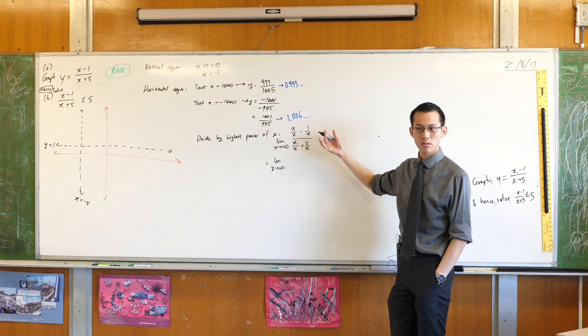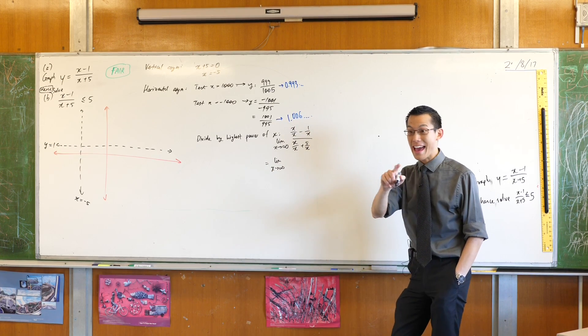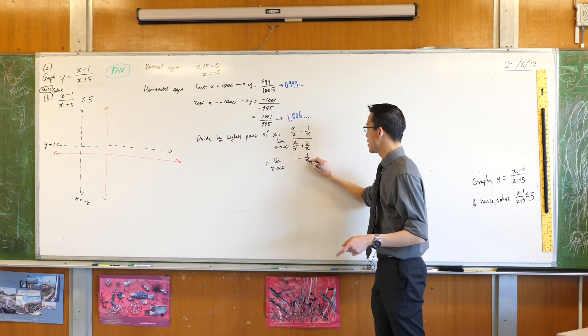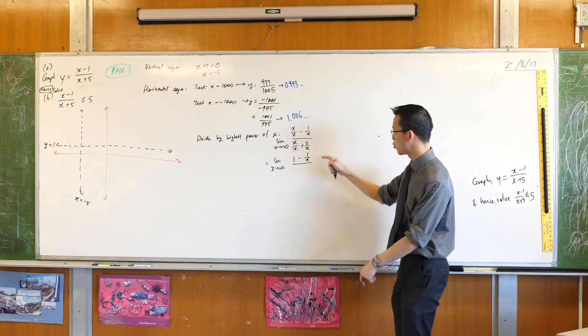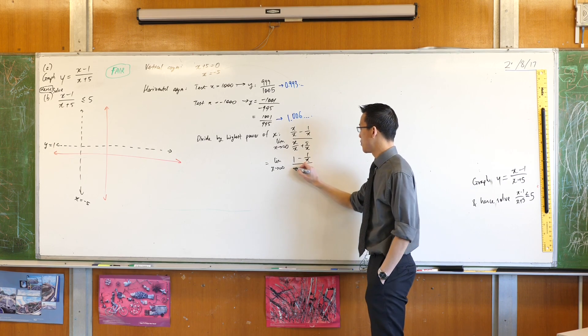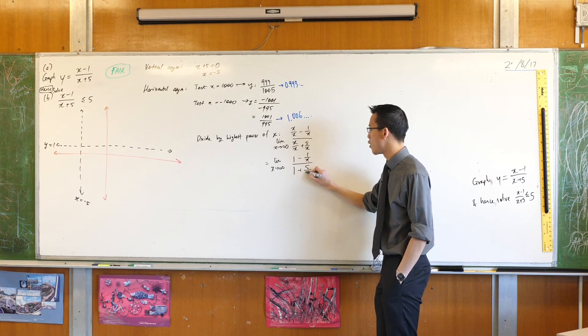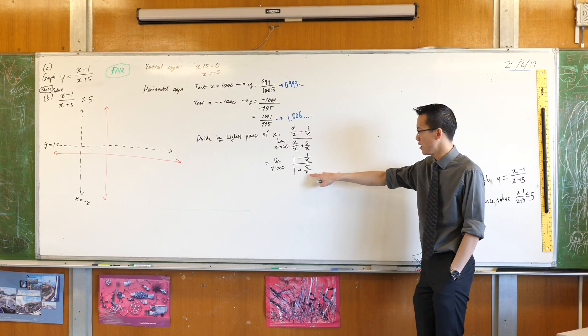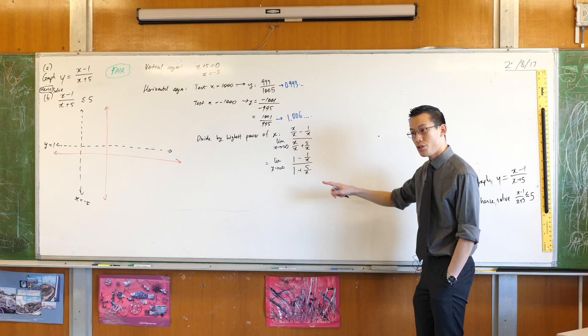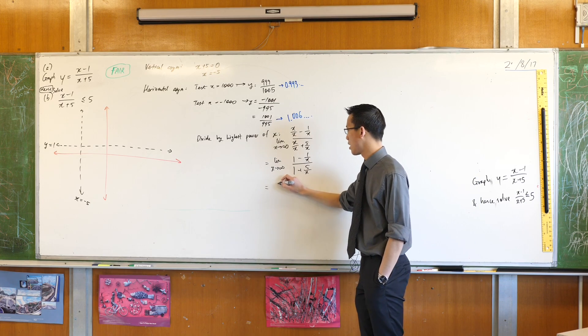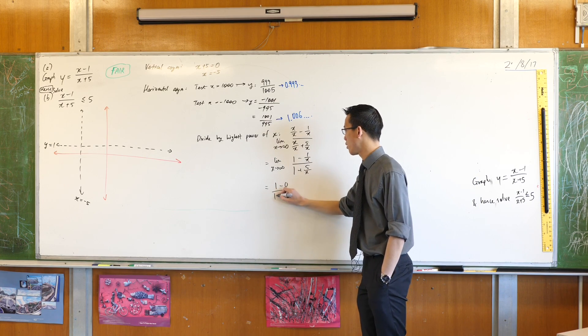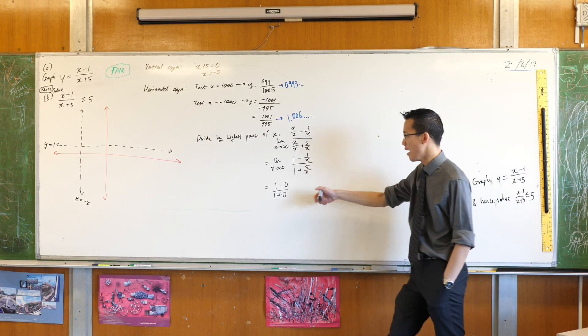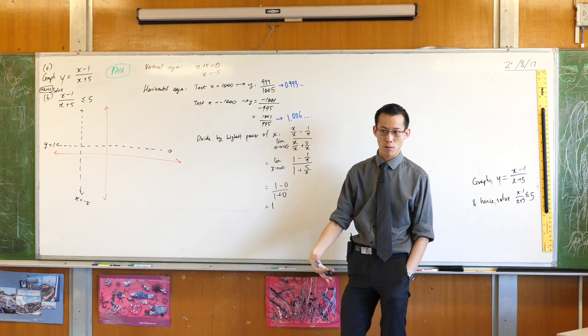yeah they're going to get tiny because it's 1 over some ridiculously large number. This guy over here is 5 over a ridiculously large number, but because it's ridiculously large he doesn't care. The 5 just sort of vanishes away. So you can see here this is going to become 1 minus 0 on 1 plus 0. So those terms there are insignificant and just like we got before we're approaching 1.